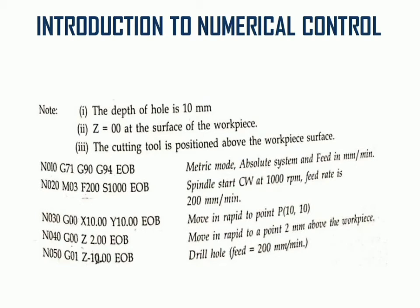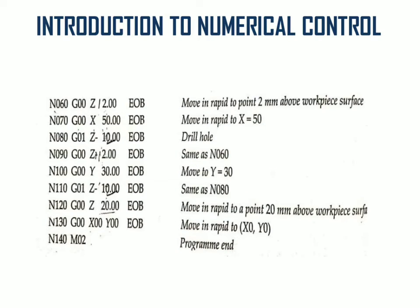Instruction block number 5, N05: machining operation in the linear direction using linear interpolation G01. The downward direction machining operation is Z minus 12, EOB. Next, instruction block number 6: rapid traverse to move the tool out of the drill hole, 10 mm, and keep the tool above the workpiece at Z plus 12.0, EOB.